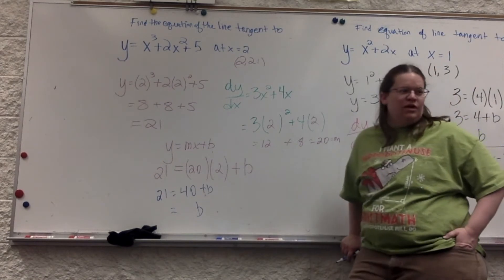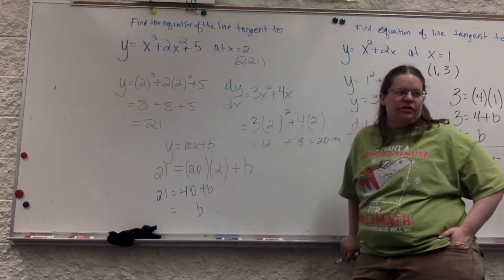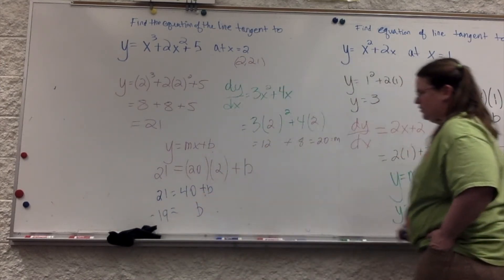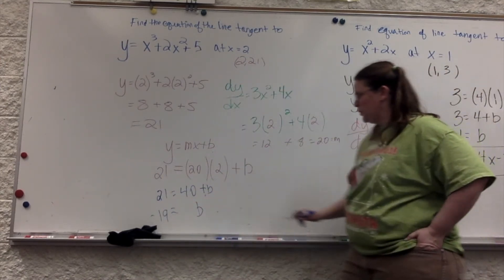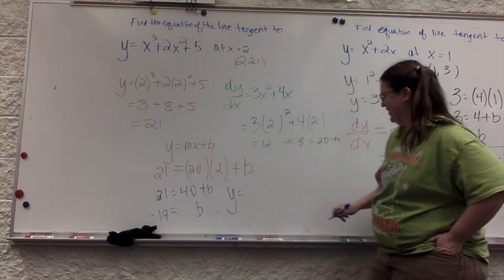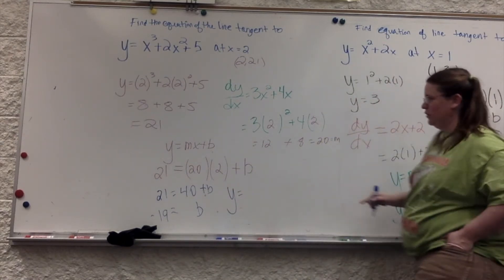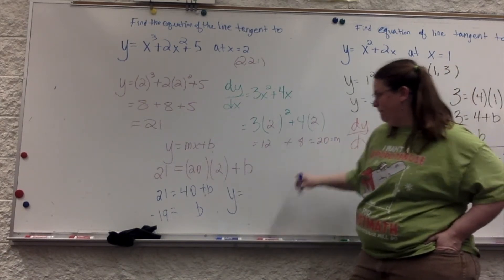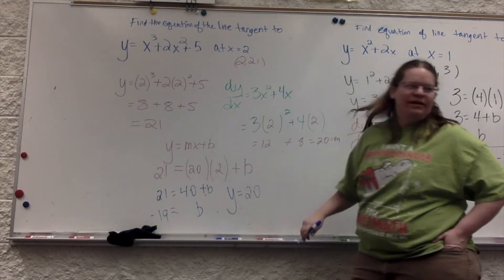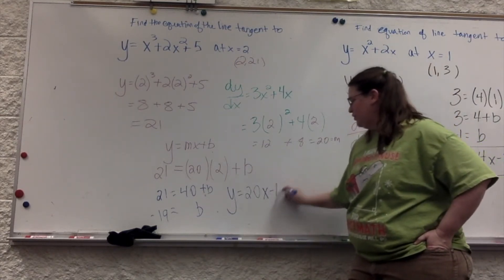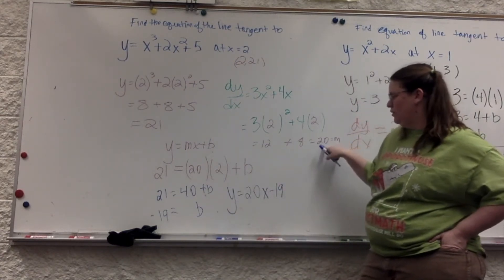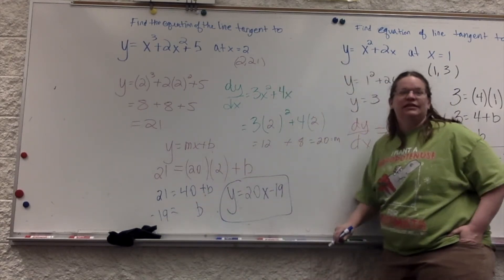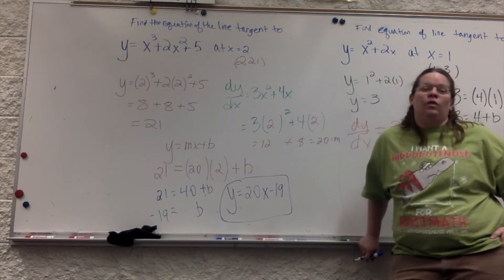And we plug in x and y. So we have 21 equals 20 times 2 plus b. What questions do you have about that? Negative 19. Yeah, negative 19. So you've got y equals 20x minus 19. And they won't all be minus. So you have y equals m, x, and then plus b. So y equals 20x minus 19. What questions do you have about that?